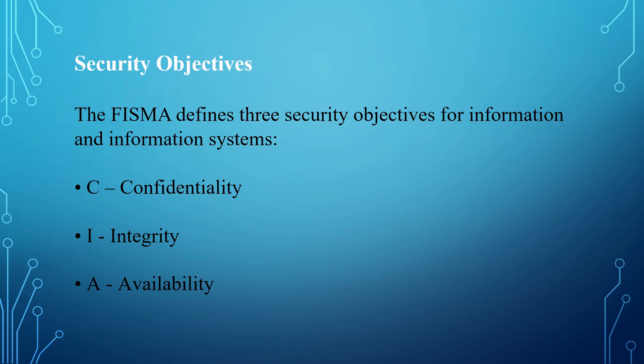Integrity seeks to prevent the unauthorized modification or destruction of information. When there is a loss of integrity, it means there is an unauthorized modification of information. Availability ensures timely and reliable access to and use of information.